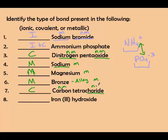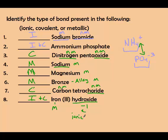The next one is covalent because both elements are nonmetals. And the last one you should have said was ionic because one element is a metal and the other is a polyatomic ion with a negative charge. Again, you could have said ionic and covalent if you knew that hydroxide is covalent, but when you mix them together it's ionic because you have charges.